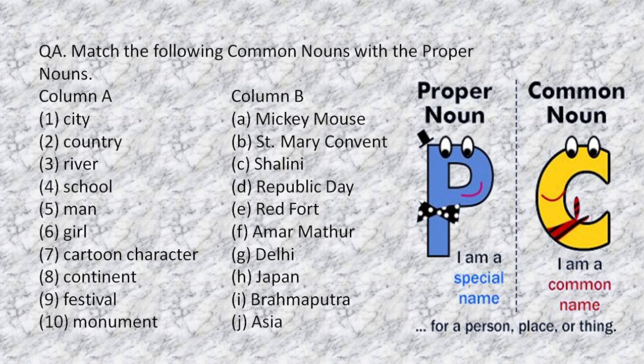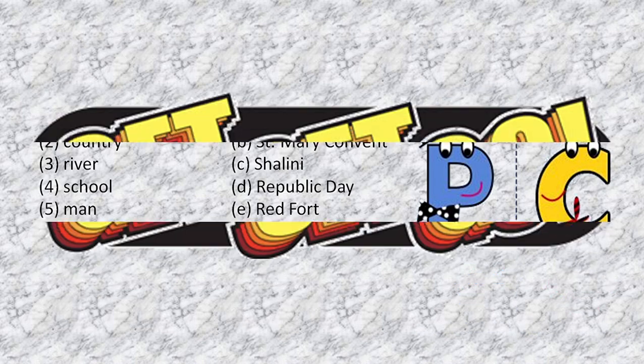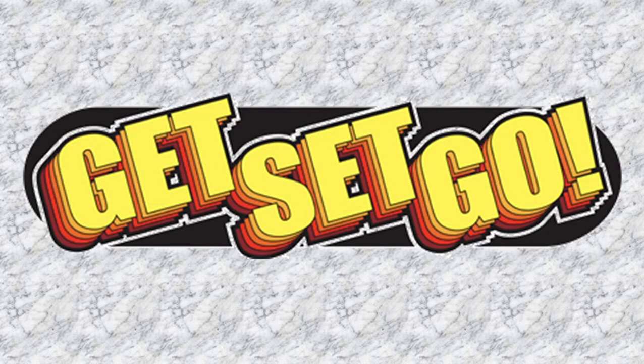Please don't forget — proper nouns begin with capital letters, they are particular or special names of your common nouns. And common nouns are actually the general name of any person, place or thing. I am sure you must have got your answers. So are you ready? Yes, I am very excited to show you the answers — are you feeling excited?